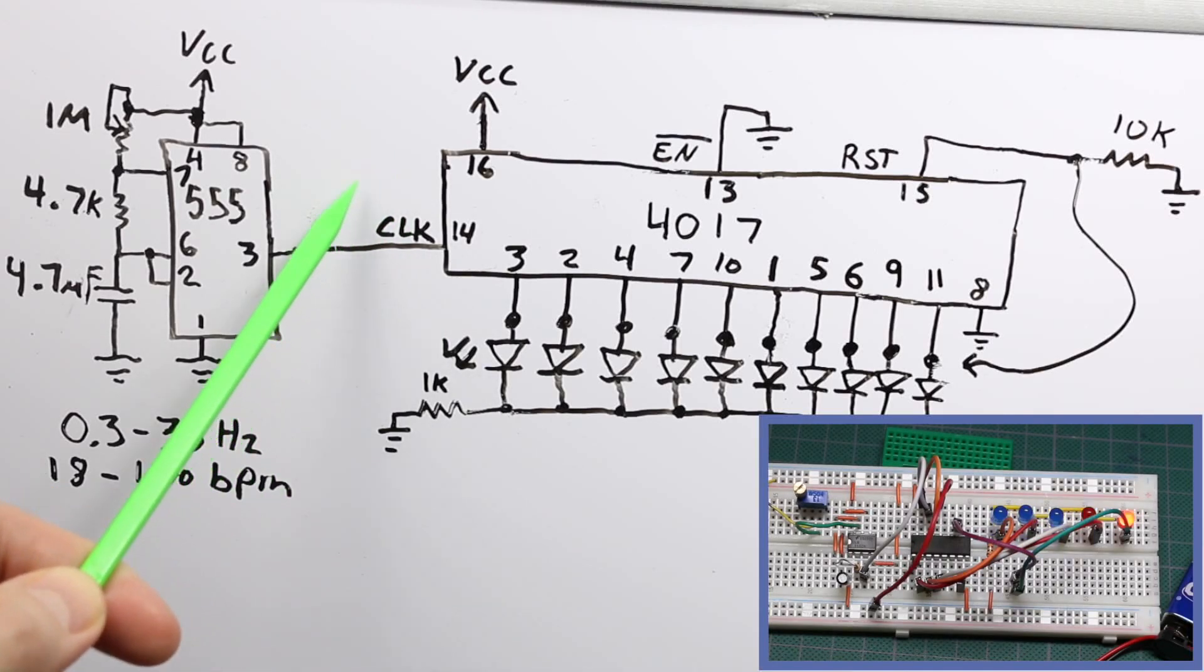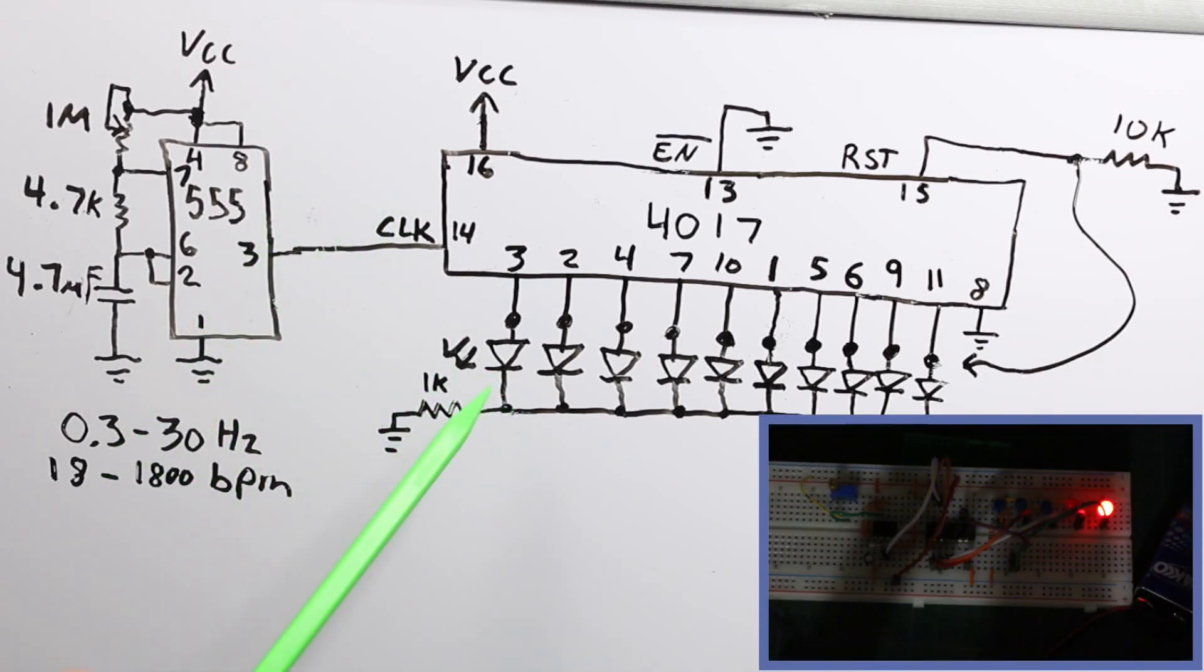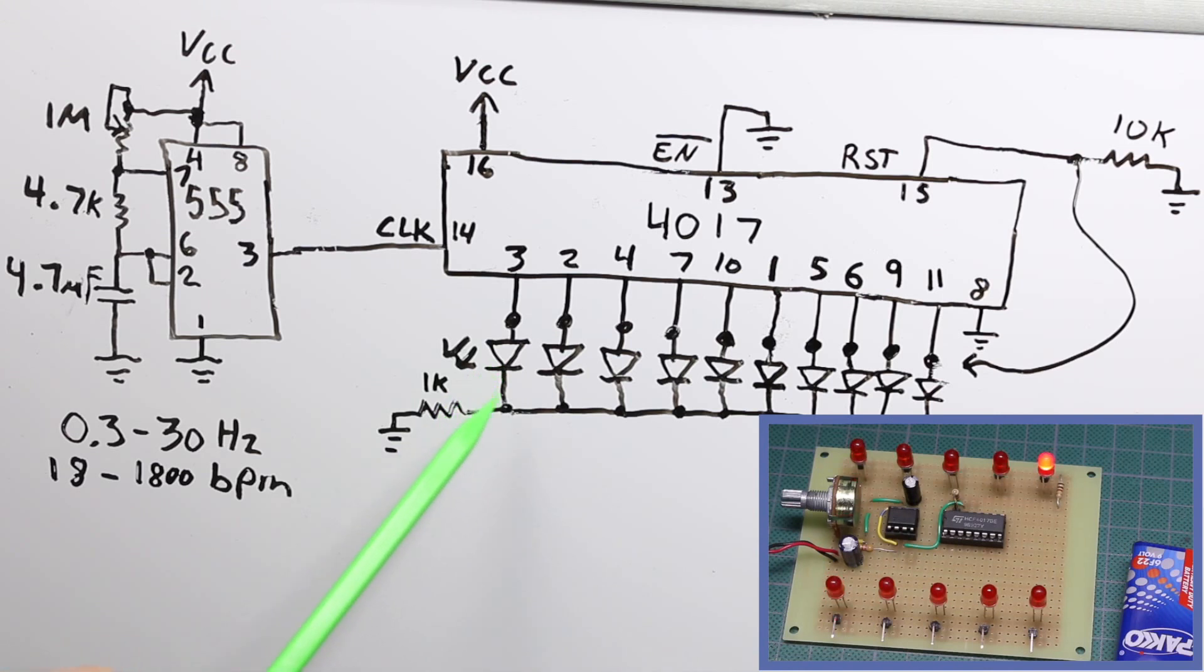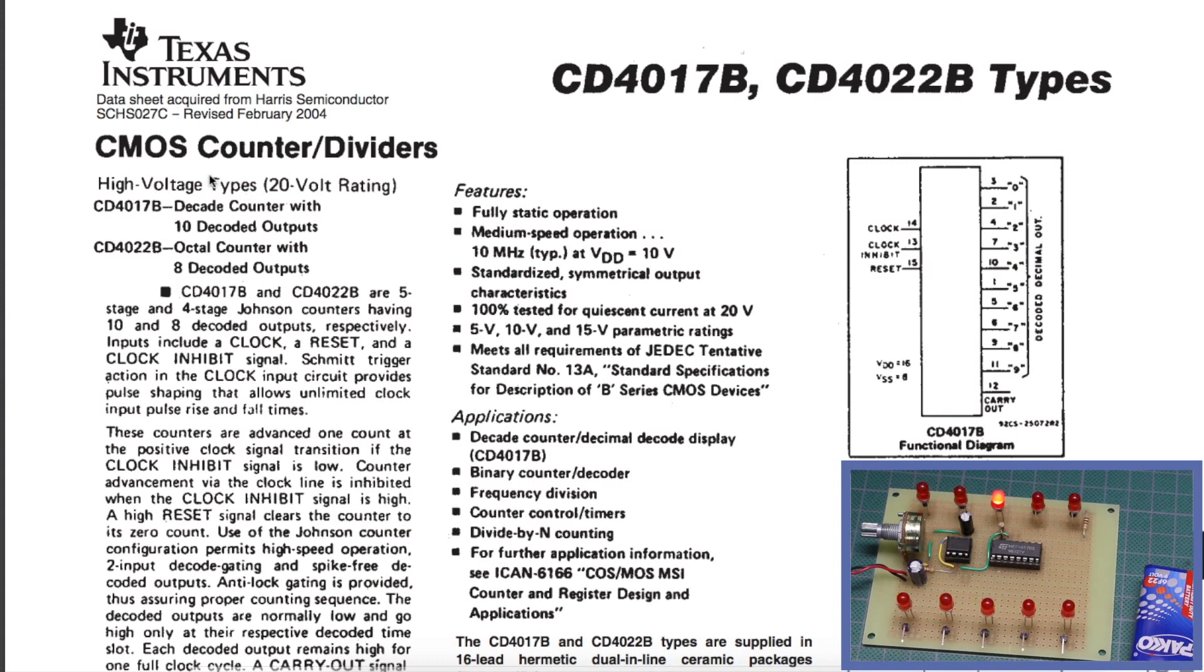Decades after I made my first 4017-based LED light chaser on a breadboard, I had an application where I could use that circuit, so it was worth soldering it up on a protoboard. The 4017 is a decade counter with 10 decoded outputs.